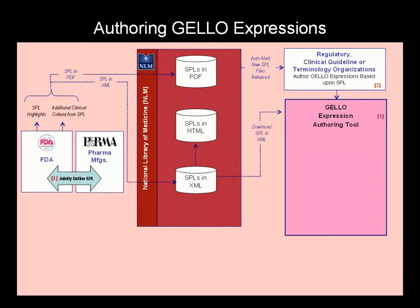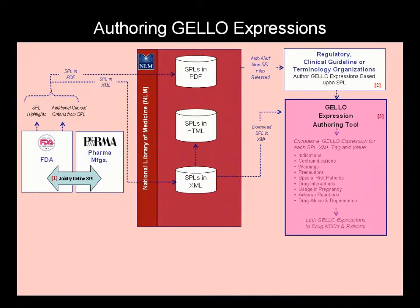The Jello expression authoring tool uses standardized terminologies to encode relevant sections of the SPL and links these expressions to national drug codes, NDCs, RxNorm codes, and other identifiers as needed. The authoring tool is informed by an HL7 virtual medical record, or VMR, information model to aid in defining the data sets and terminologies that will be used in authoring the query.